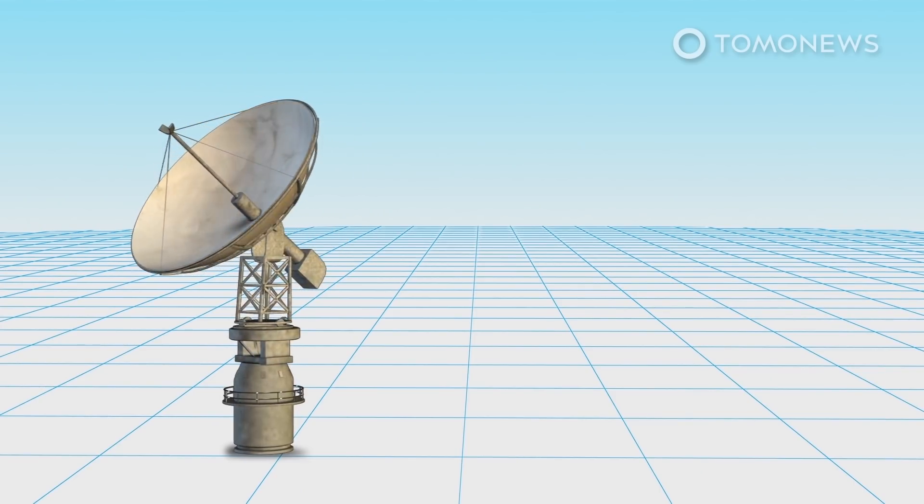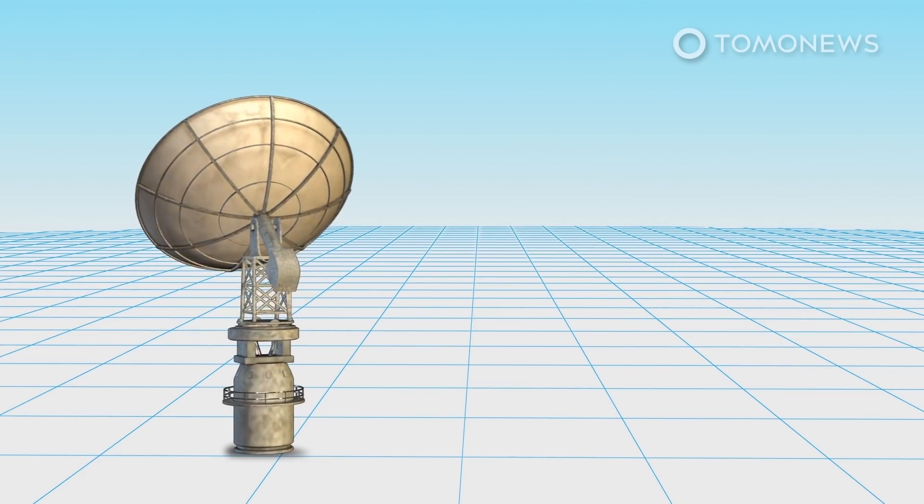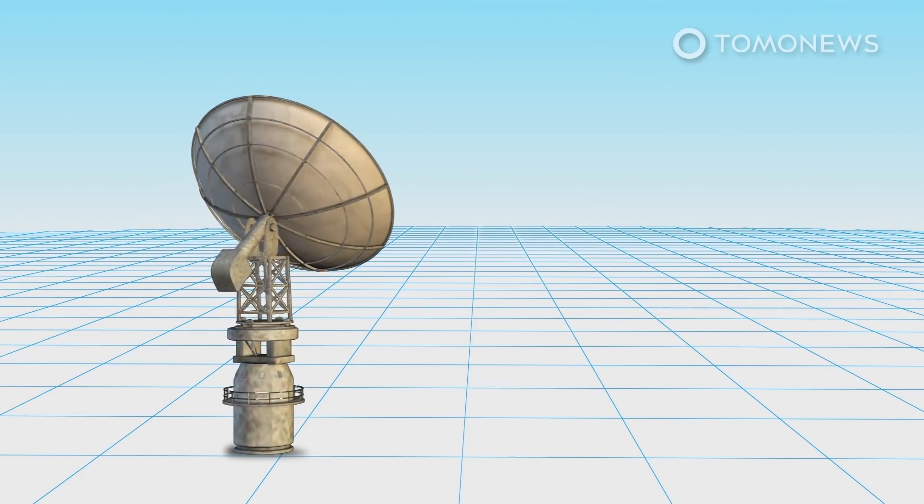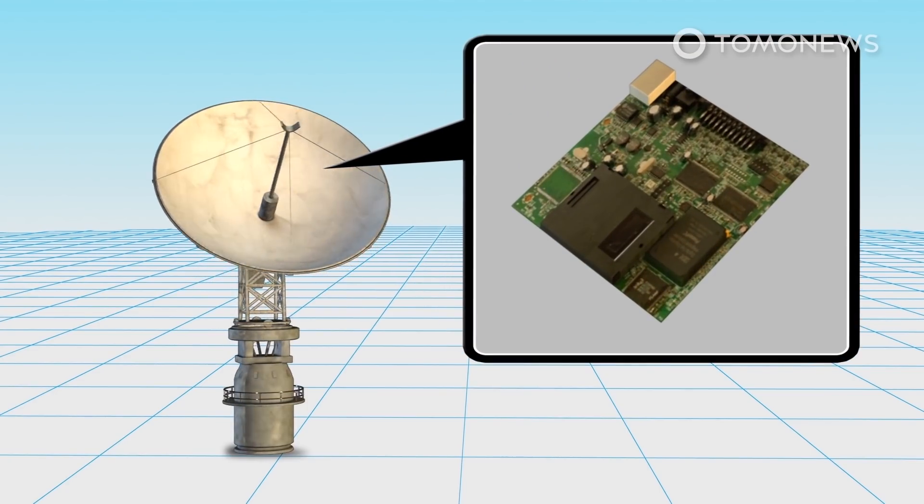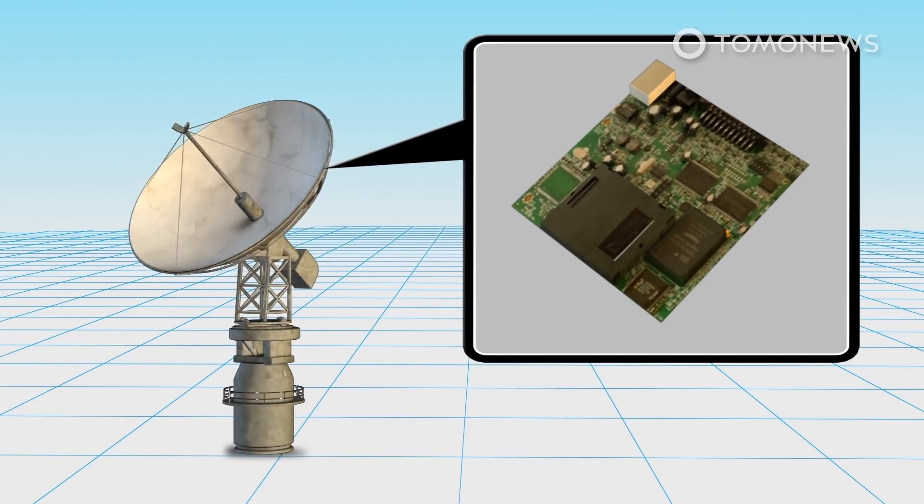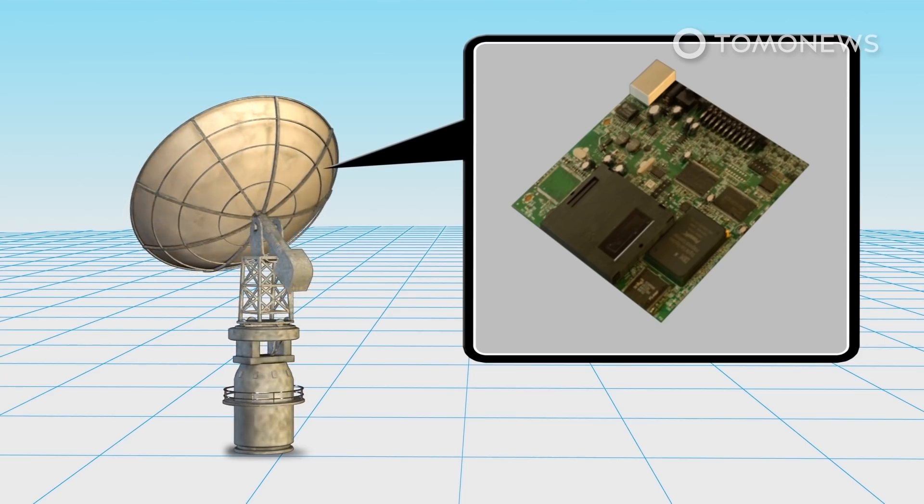NASA said in the news release that the radio antenna's transmitters and other parts need to be replaced and upgraded, as they are 40 years old and are increasingly unreliable. The DSS-43 antenna is part of the U.S. space agency's deep space network, which is used to communicate and receive information from faraway spacecraft.